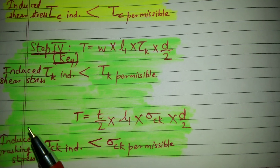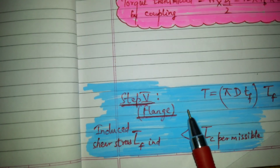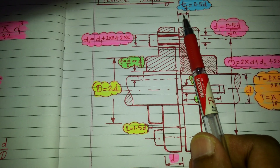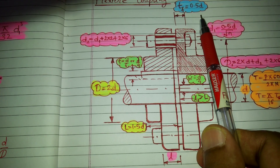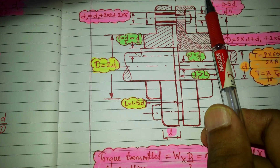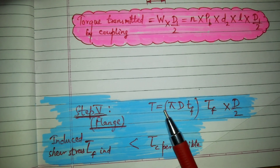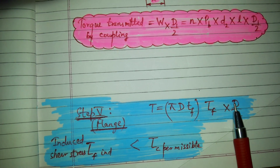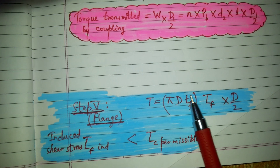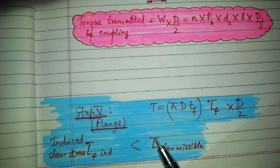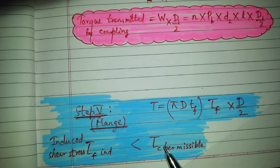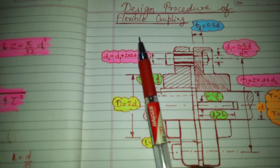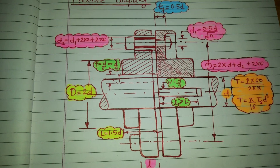Finally, we design the flange. The thickness of the flange equals 0.5d, where d is the diameter of the shaft. For stresses, torque equals pi into D into tf into shear stress on the flange into D divided by 2. The induced shear stress in the flange, denoted C for cast iron, must be less than the permissible shear stress. This completes the design procedure of flexible coupling.